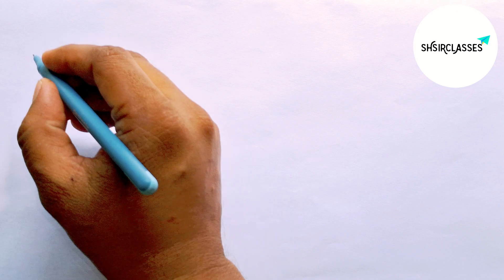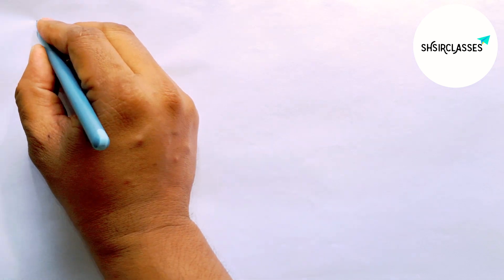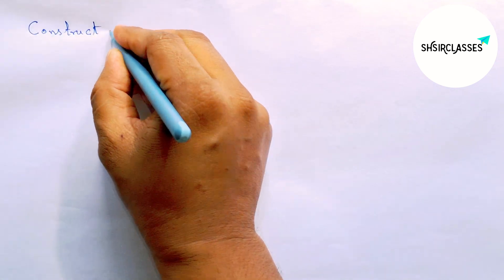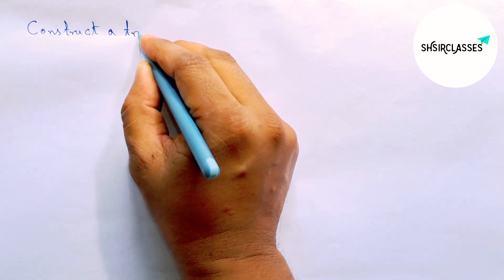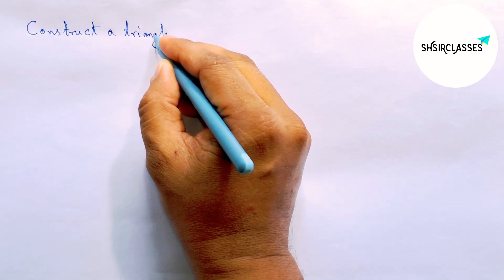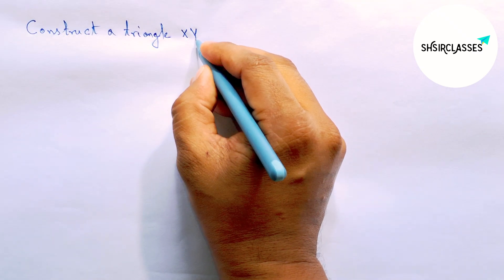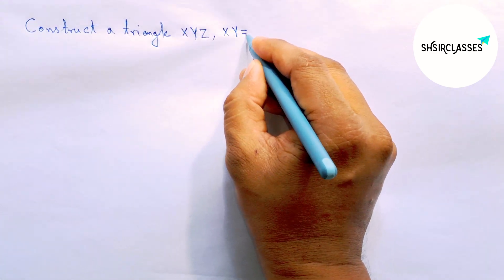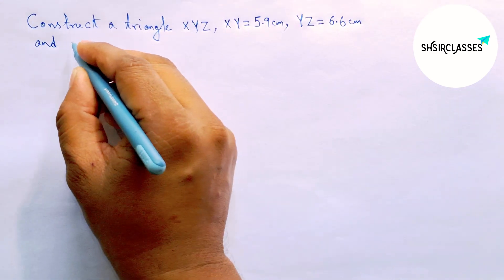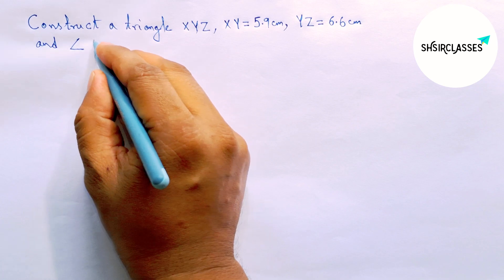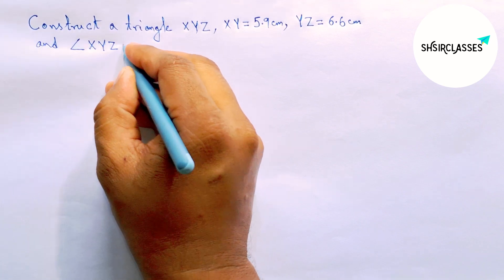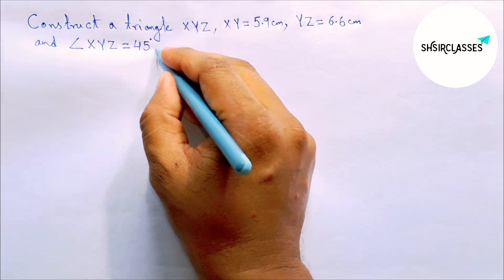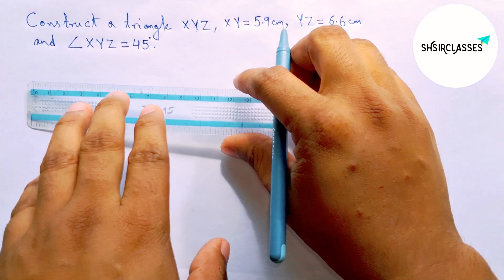Hi everyone, welcome to share classes. Today in this video we will construct a triangle XYZ where XY equals 5.9 centimeters, YZ equals 6.6 centimeters, and the given angle XYZ equals 45 degrees. So let's start the video.